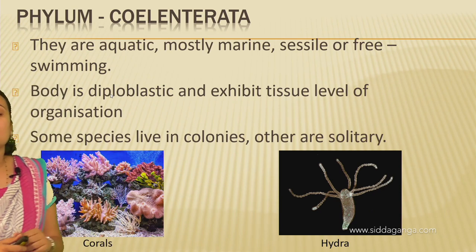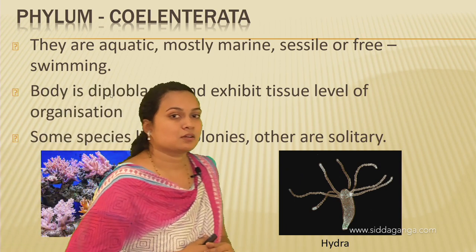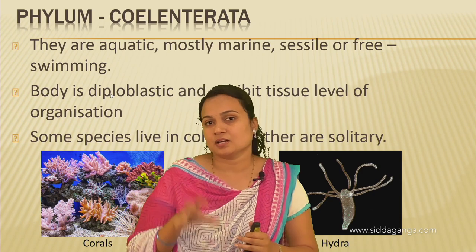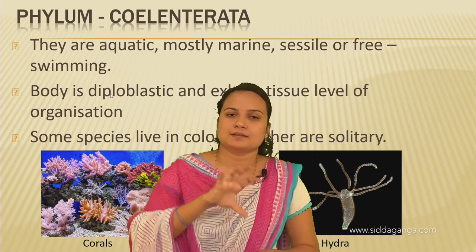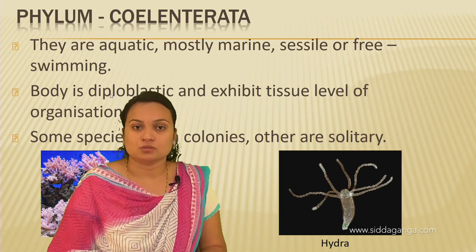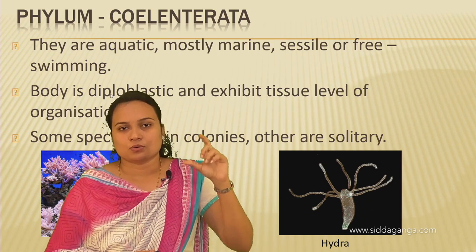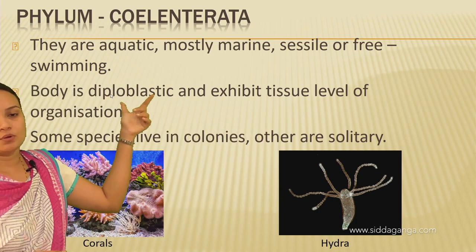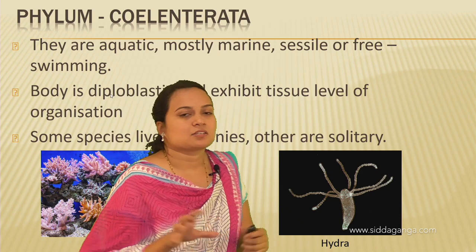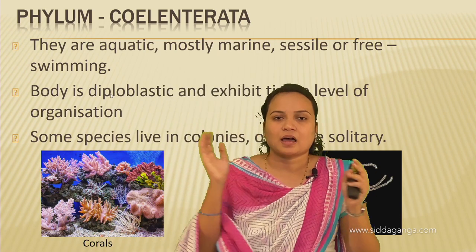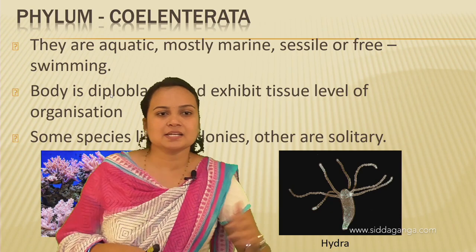Platyhelminthes have a dorsoventrally flattened body — hence they are called flatworms. They are bilaterally symmetrical: if you cut the organism in one plane, you will have two identical halves. They are triploblastic — having outer ectoderm, middle mesoderm, and inner endoderm — three body layers.